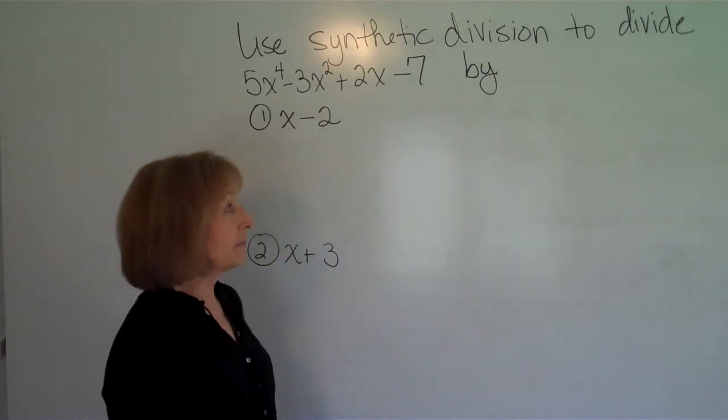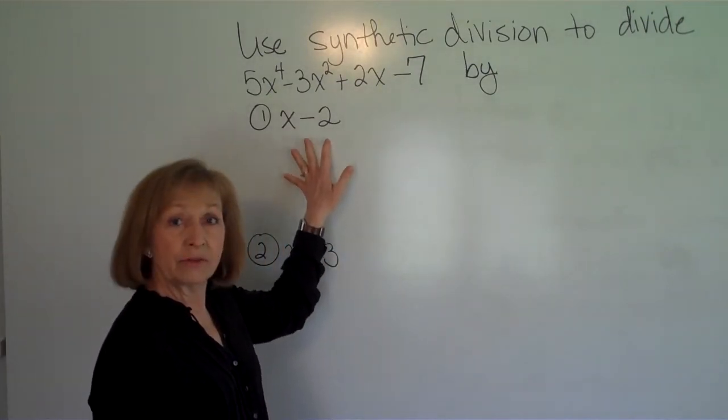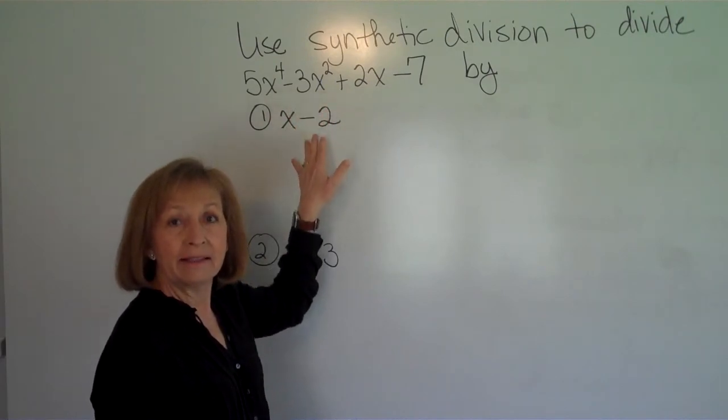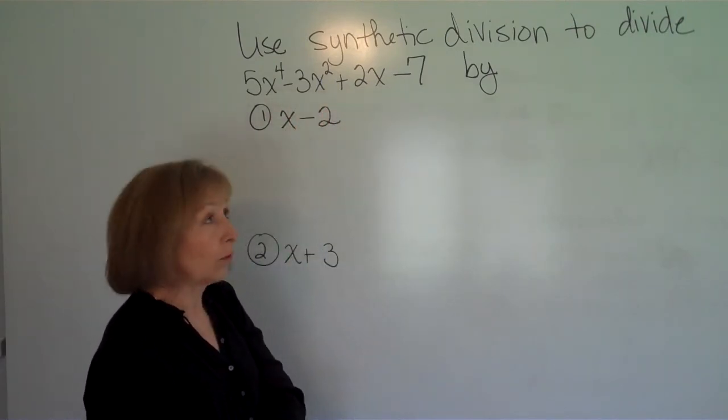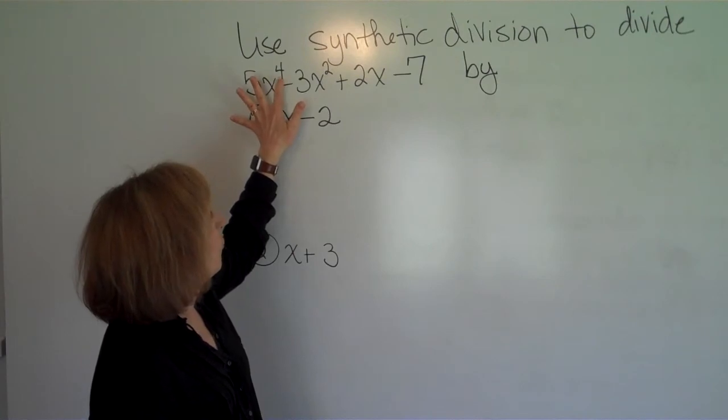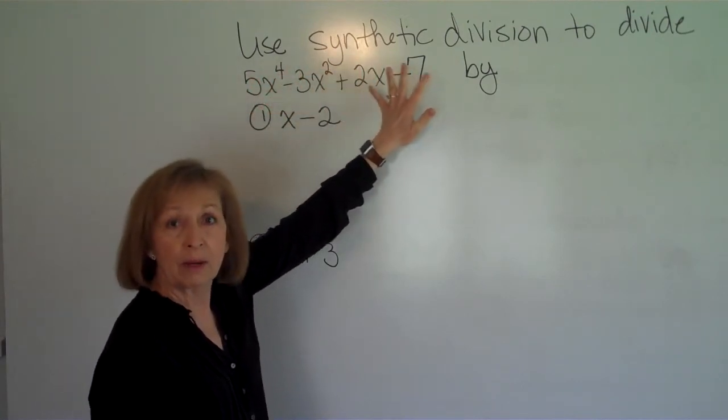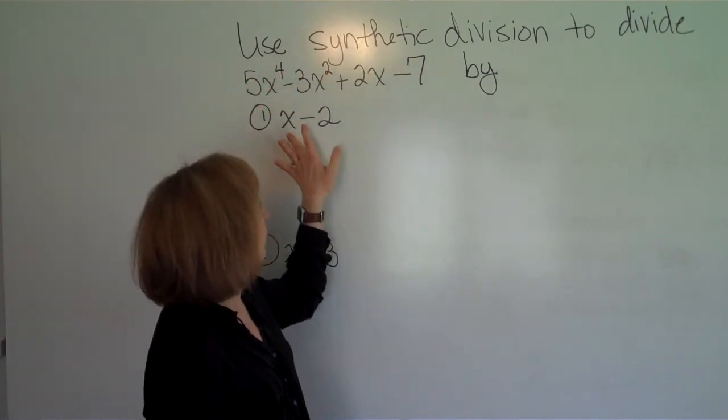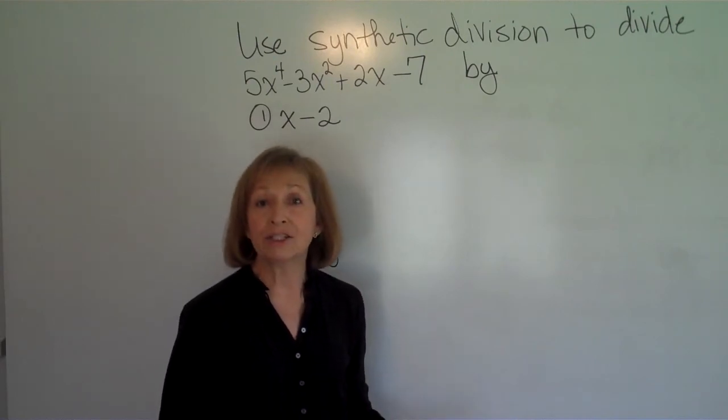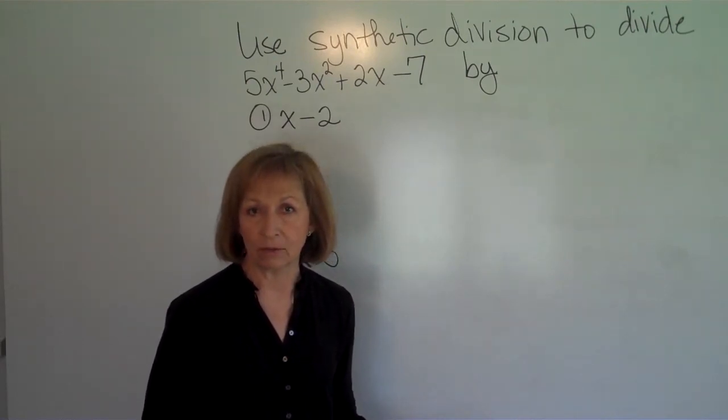When we're doing synthetic division we need to make sure that the polynomial and the divisor are written in descending order. So I have the 4th power, then the 2nd power, the 1st power, and then no power on it. And then the 1st power and then no power. So I do have them in descending order.